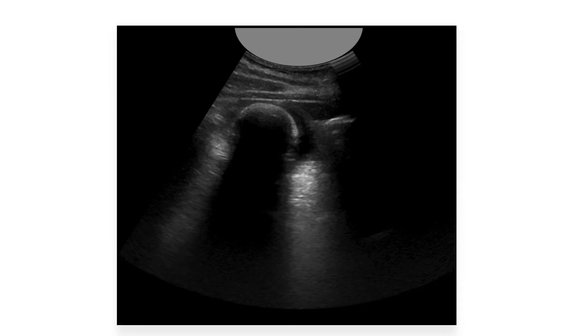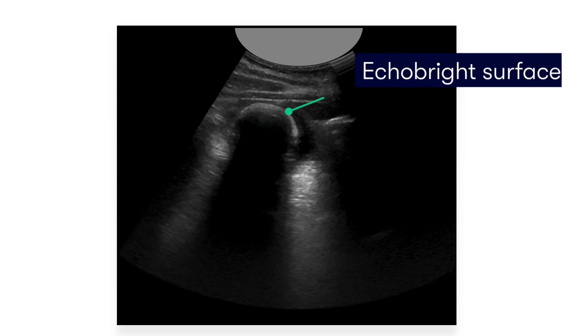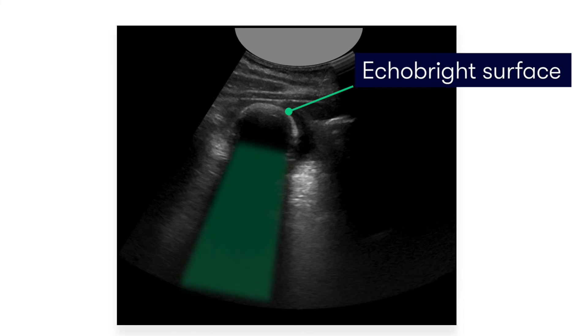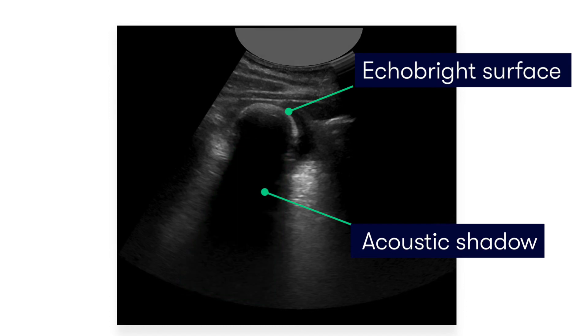If you haven't already spotted it, the gallstone is sitting in the center of the image. How do we know that's a gallstone? Well, as you now know, because we are looking for the echo bright gallstone surface, and there it is. And also we're looking for the acoustic shadow, which should be beyond the stone. And what do you know, there it is. See, I told you finding gallstones really isn't that hard.